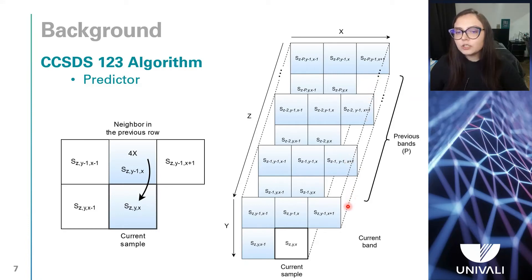The prediction in each sample generally depends on the values of neighboring samples in the current band and in some previous bands. The amount of previous bands is a parameter that is specified by the user, and in this work we use the number 3.